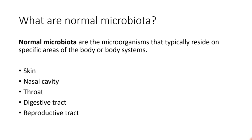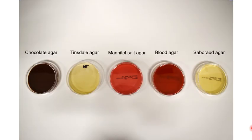In the lab, however, we are going to limit our focus to just two of these areas of the body: the skin and the throat. The goal of this lab is to take swabs of these two areas and inoculate them onto a variety of differential and selective media plates to identify which specific species are present. Because you're not doing this lab in person, the swabs taken are not going to be from you — they're going to be from my skin and my throat.